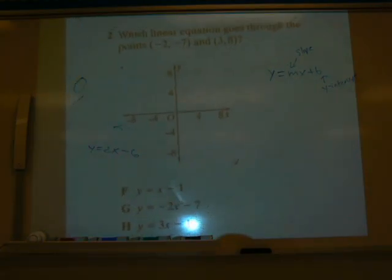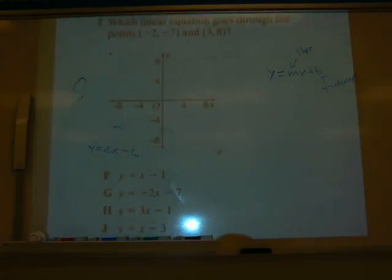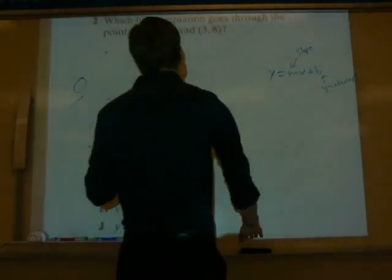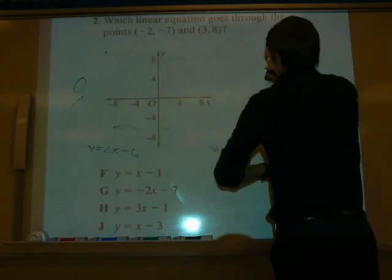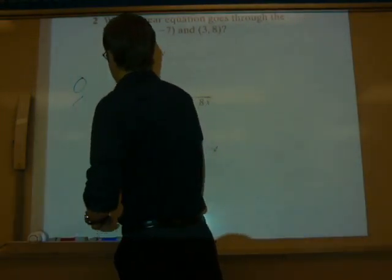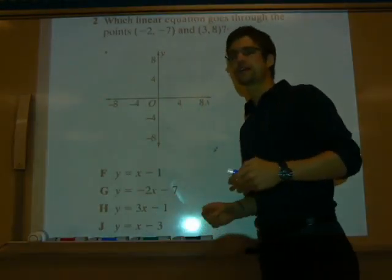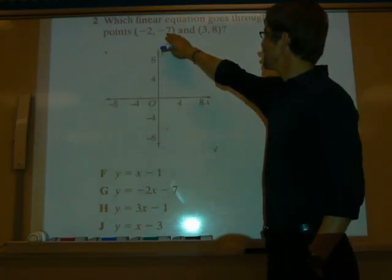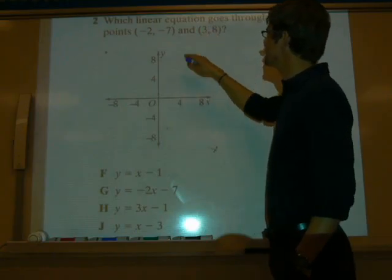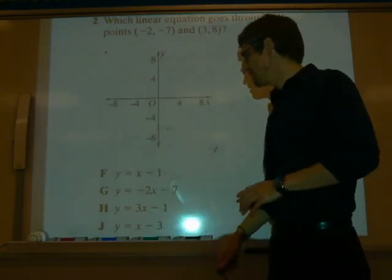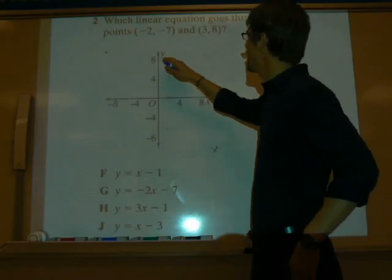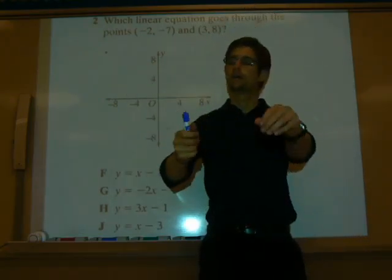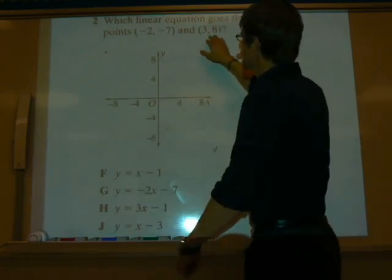Let's look at number 2. Which linear equation goes through the points negative 2, negative 7, and 3, 8? There's two ways of doing this. The easy way is to just go to your calculator, graph y equals x minus 1, then go to your table and see if both of these points lie on there. Another way to do it is to figure out the equation of the line that runs through these two points.